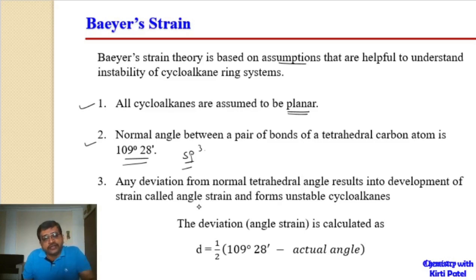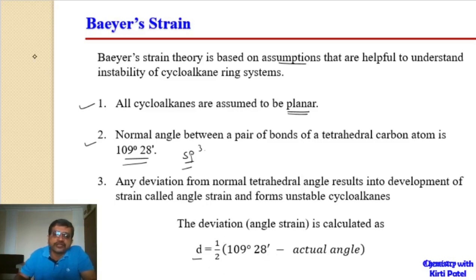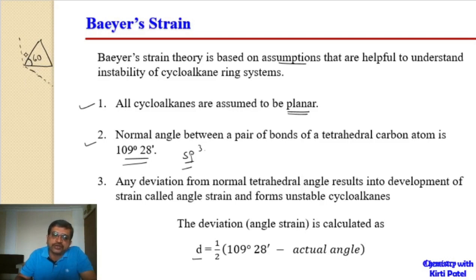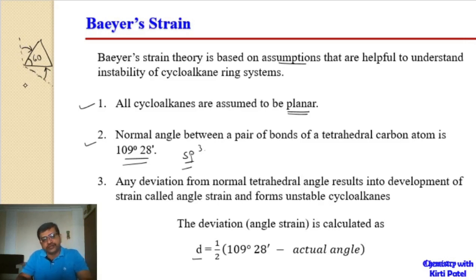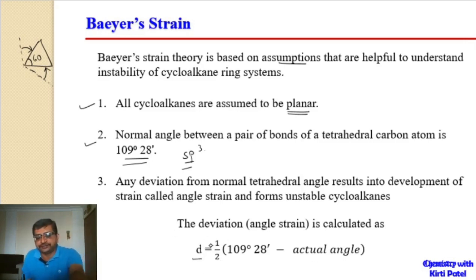The deviation in angle related to the angle strain can be calculated by the formula: d = ½ × (109° 28' − actual angle). The factor of one-half is used because the deviation is shared across both bonds at the angle. For example, in cyclopropane, the actual angle is 60 degrees, so the total difference from the normal angle is 49 degrees 28 minutes, and half of that gives the deviation for a single bond.